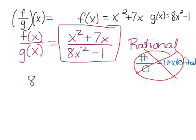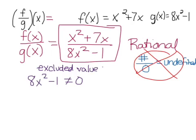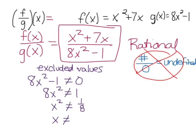To find the excluded values — the values we cannot use because they make the denominator 0 — we take the denominator and set it not equal to 0. Solving: 8x squared cannot equal 1, so we add 1 to both sides, divide both sides by 8, and then take the square root. Whenever we take the square root we must include the plus or minus sign.